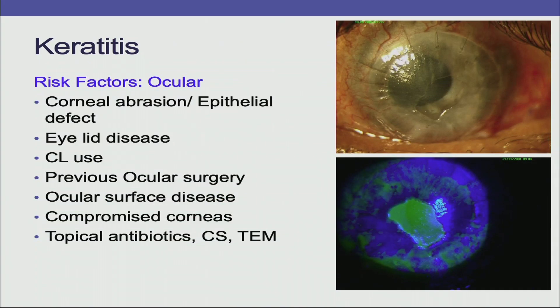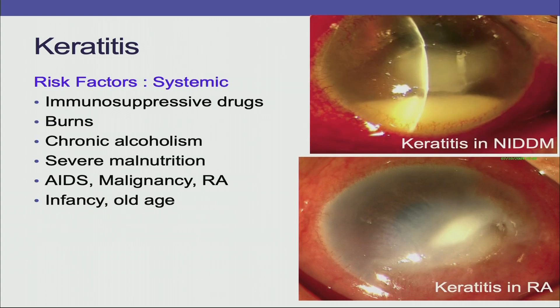The risk factors for bacterial keratitis could be ocular or systemic. The ocular risk factors include corneal abrasion or epithelial defect, eyelid disease, contact lens use, previous ocular surgery, ocular surface disease, compromised corneas, and injudicious use of topical antibiotics, steroids, and traditional eye medicine.